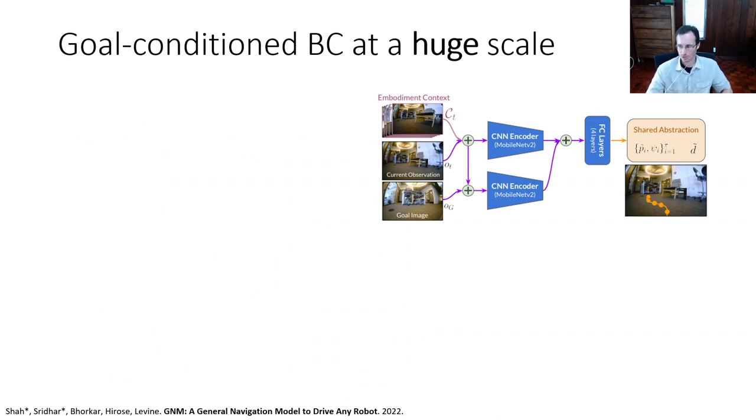The other nice thing about these goal condition behavior cloning methods is they're quite scalable. So you can apply them at a huge scale. This next case study I'm going to tell you about. This was a paper led by Dhruv Shah and Ajay Sridhar, where what they did is they developed a policy for driving ground robots, not autonomous cars yet, but smaller scale ground robots, that could actually generalize across many different kinds of robots. So it's a goal conditioned imitation learning method that takes in the current observation and the goal image, and actually takes in a history to deal with that non-Markovianness problem. And then it outputs the action.